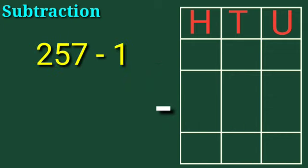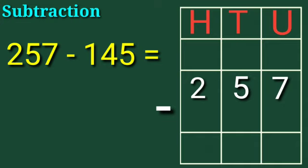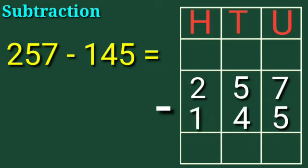Now let's take one more example: 257 minus 145. 7 is under the units column, 5 is under the tens column, 2 is under the hundreds column. 5 is under the units column, 4 is under the tens column, 1 is under the hundreds column.